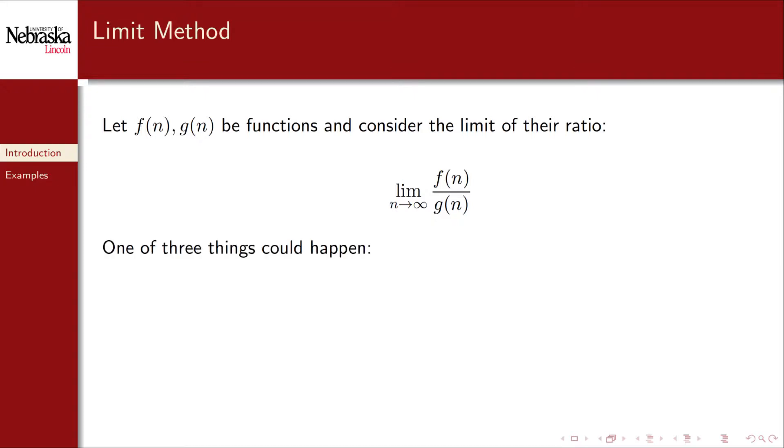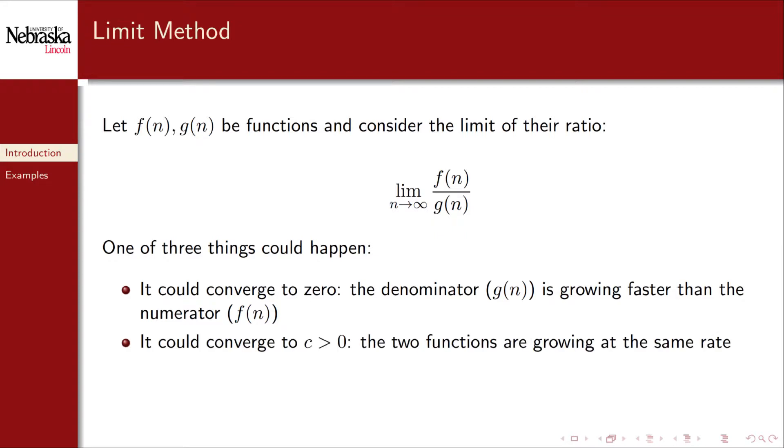One of three things could happen with this limit. It could converge to zero. In this case it would mean that the denominator is growing faster than the numerator. Or it could converge to some positive constant, which means that the two functions are growing at the same rate of growth. Or it could diverge off into infinity, which means that the numerator f(n) is growing faster than the denominator g(n).